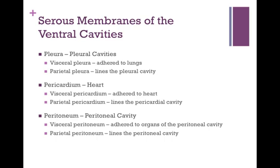The pleura lines the pleural cavities and houses the lungs. The visceral pleura is adhered to the lungs; the parietal pleura lines the pleural cavity. The pericardium surrounds the heart — the visceral pericardium is adhered closely to the heart, and the parietal pericardium lines the pericardial cavity. The peritoneum lines the peritoneal cavity — the visceral peritoneum is adhered to the organs of the peritoneal cavity, and the parietal peritoneum lines the peritoneal cavity.